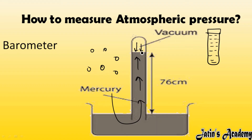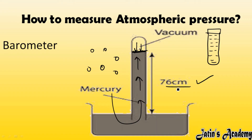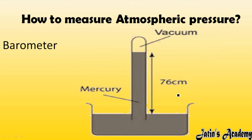Substances move from higher pressure to lower pressure, so outside pressure pushes mercury up, while mercury's own weight pulls it down. A point is reached where mercury neither moves up nor moves down — equilibrium. The height attained at this point is 76 centimeters, or 0.76 meters. This height is the key measurement used to find standard atmospheric pressure.